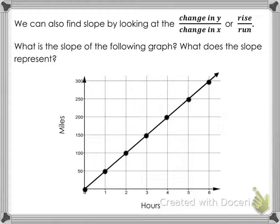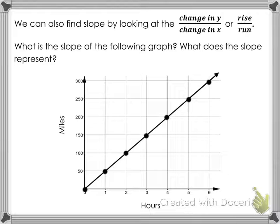We can also find the slope by looking at the change in Y over the change in X — rise over run — something that should be fairly familiar. When asked what is the slope of a graph, you want to locate spots on the graph where you can perform the rise over run. You need dots where the line crosses through the coordinate plane grid corners — that's where you want to look for your dots.